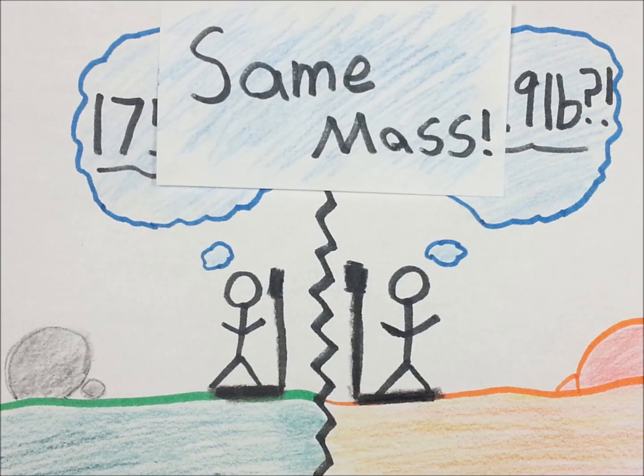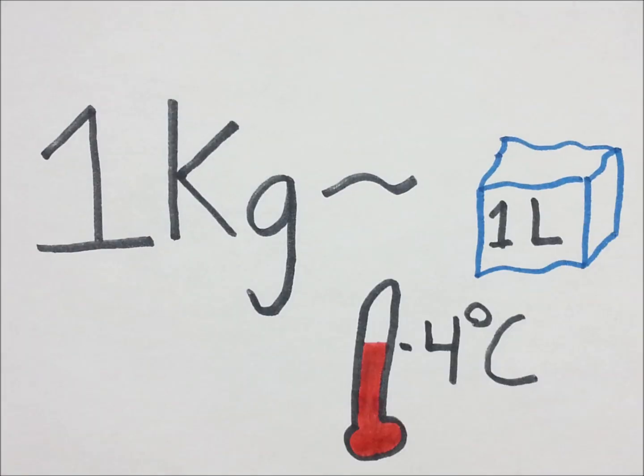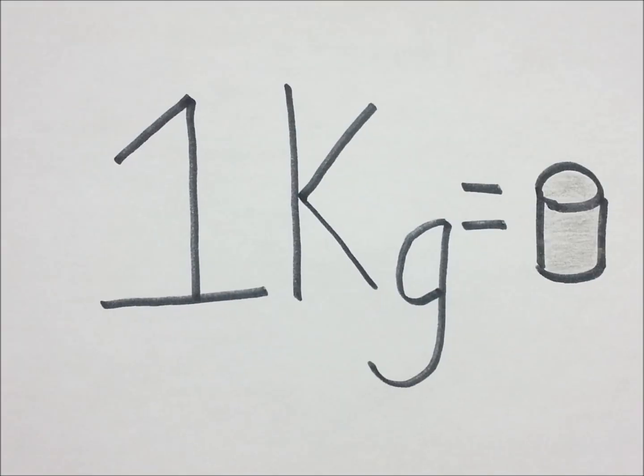So the unit used to measure mass is the kilogram. The kilogram was first based off one liter of water at 4 degrees Celsius. Now this is based off a more stable platinum-iridium cylinder, which is held in France. It's essentially the amount of matter in a substance.